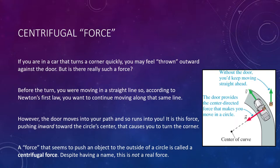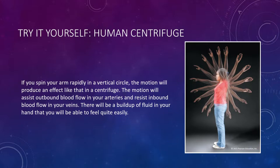Let's look at some interesting cases of apparent forces in circular motion, starting with an example you can prove right now. Imagine you take one of your arms and spin it rapidly in a vertical circle. The motion of spinning your arm in a circle will act like a centrifuge — the blood in your arm is going to be forced outward toward your hand, resulting in a buildup of blood there. If you spin your arm around rapidly, you can feel the blood being rushed to your hand due to this centrifugal quote-unquote force.